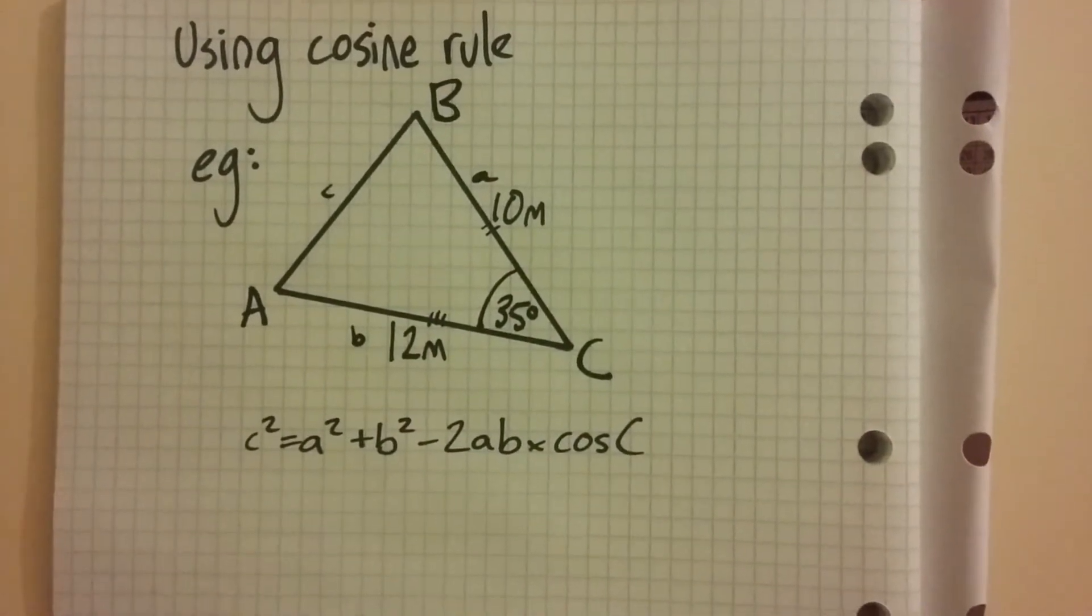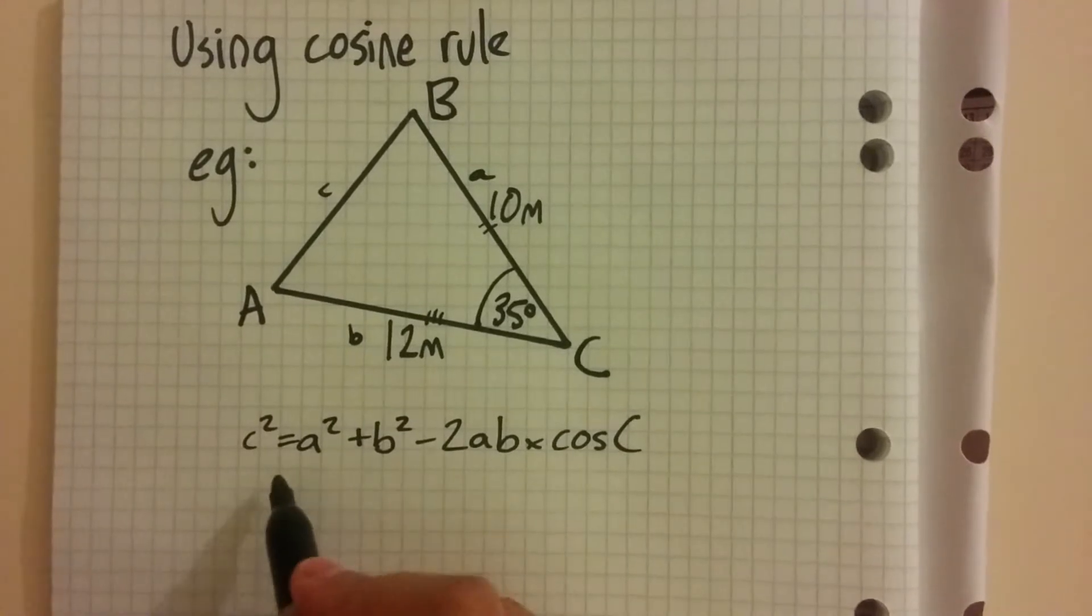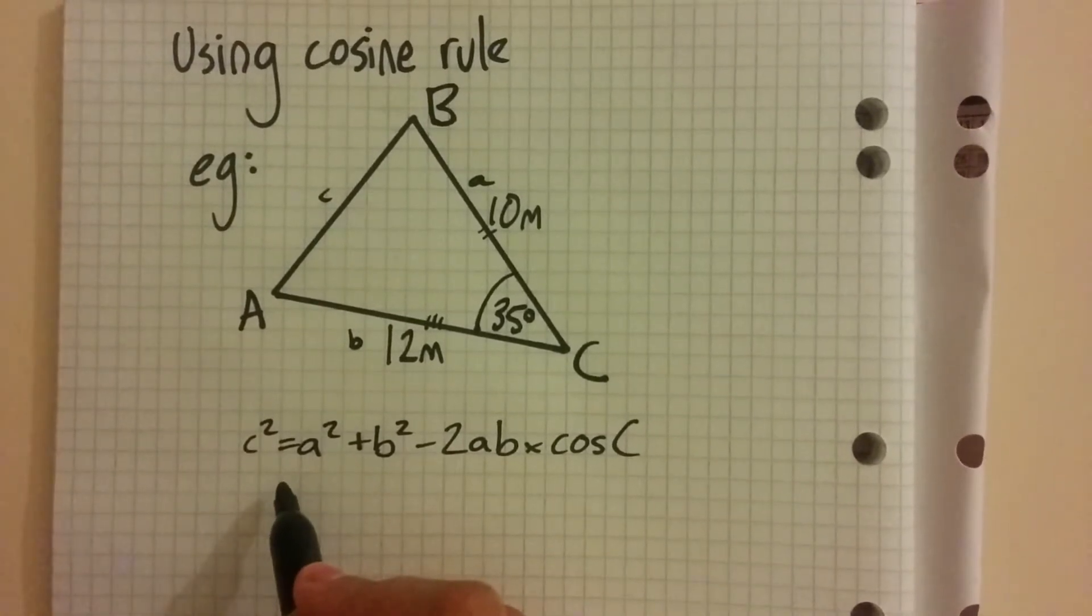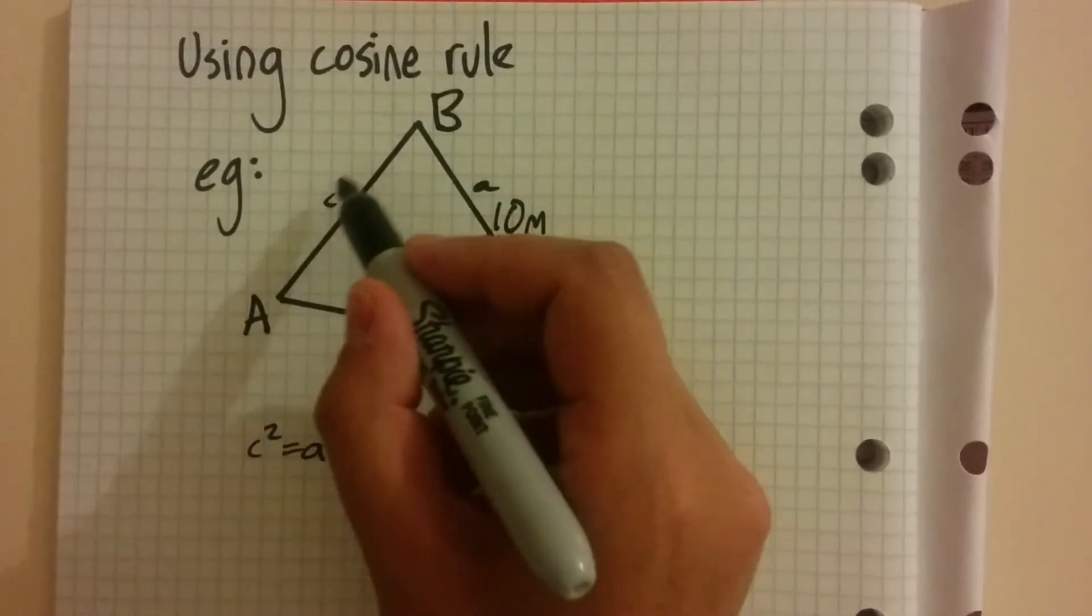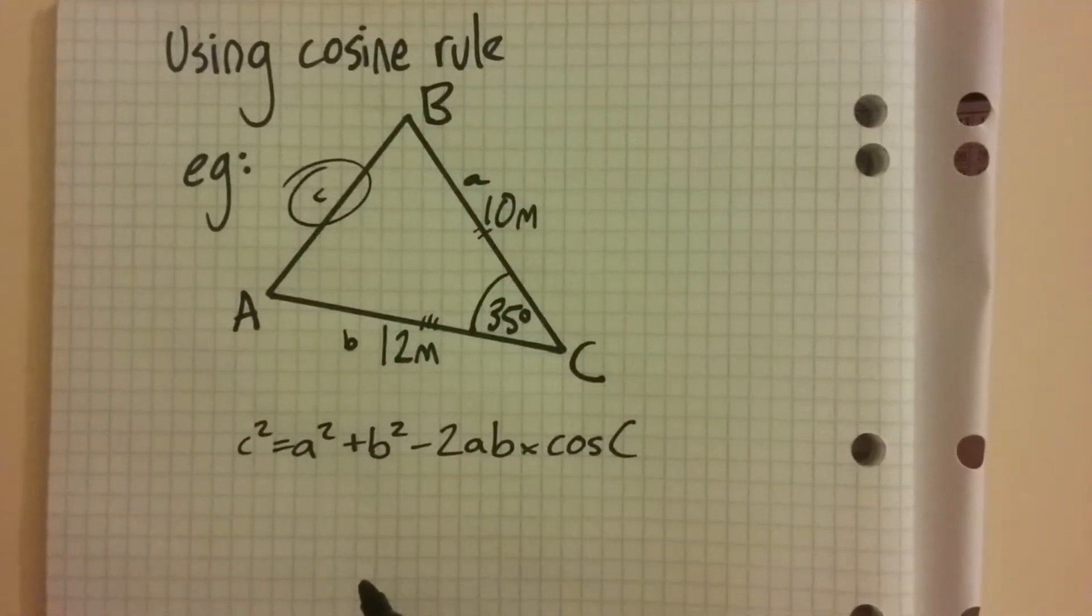We've now got all the values we need. Substitute into the formula. This will let us find our unknown side c.